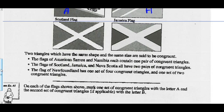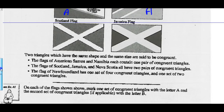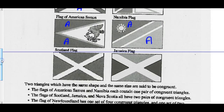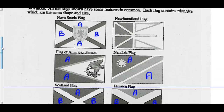The flags of Scotland, Jamaica, and Nova Scotia all have two pairs of congruent triangles. Nova Scotia has two pairs — these two are congruent and these two are congruent. Scotland and Jamaica are the same situation: these two are congruent triangles and these two are congruent triangles. Same thing with the Jamaican flag. Newfoundland has a set of four and one set of two congruent triangles — these four are all congruent triangles and these two are congruent.